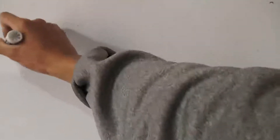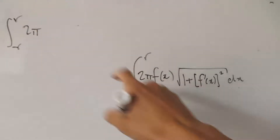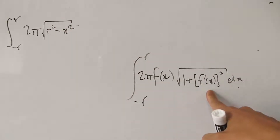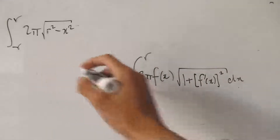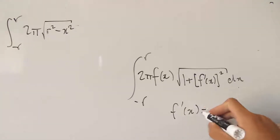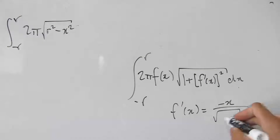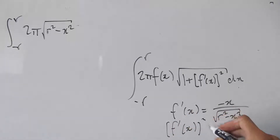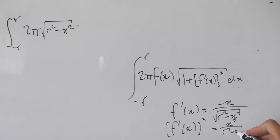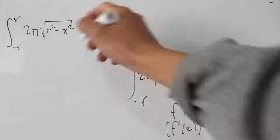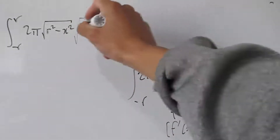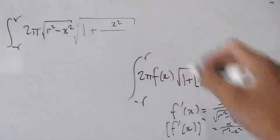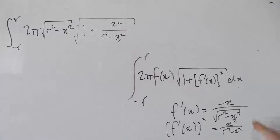We have the integral from negative r to r of 2π times the square root of r squared minus x squared. For this part we need the derivative of our function. f prime of x equals negative x over the square root of r squared minus x squared, so f prime of x squared equals x squared over r squared minus x squared. We substitute all this in: f of x is the square root of r squared minus x squared, and inside the big square root we have 1 plus x squared over r squared minus x squared, times dx.